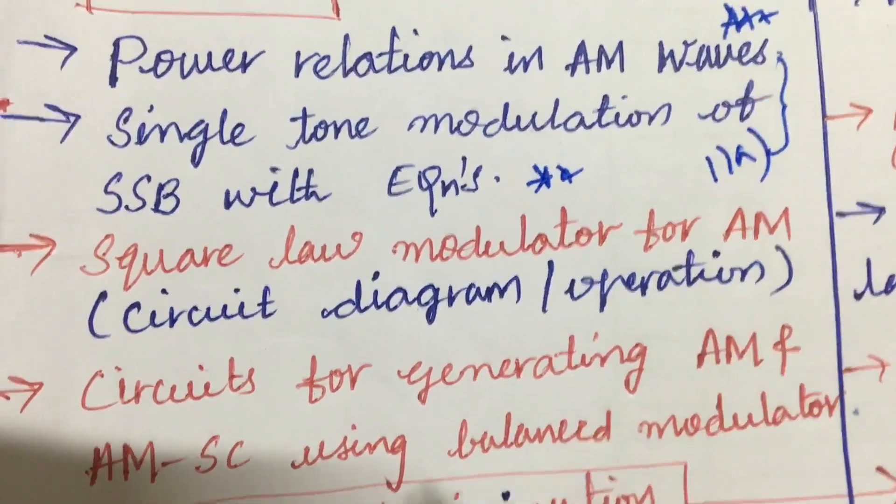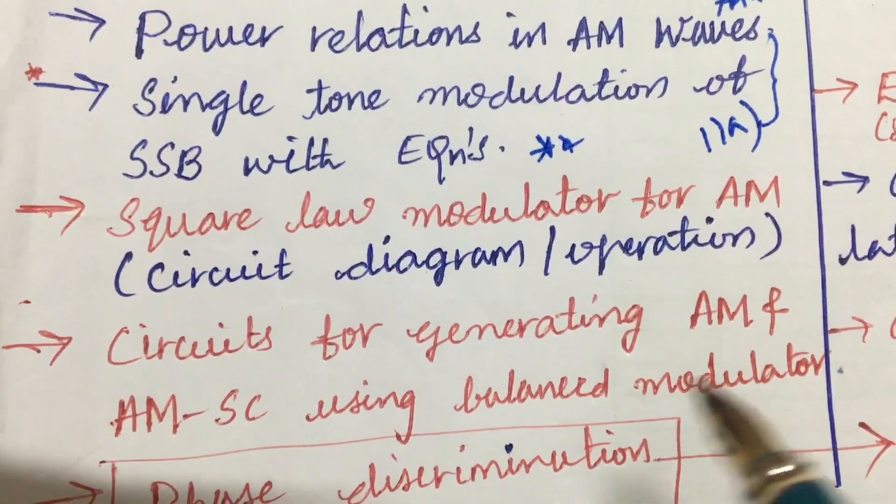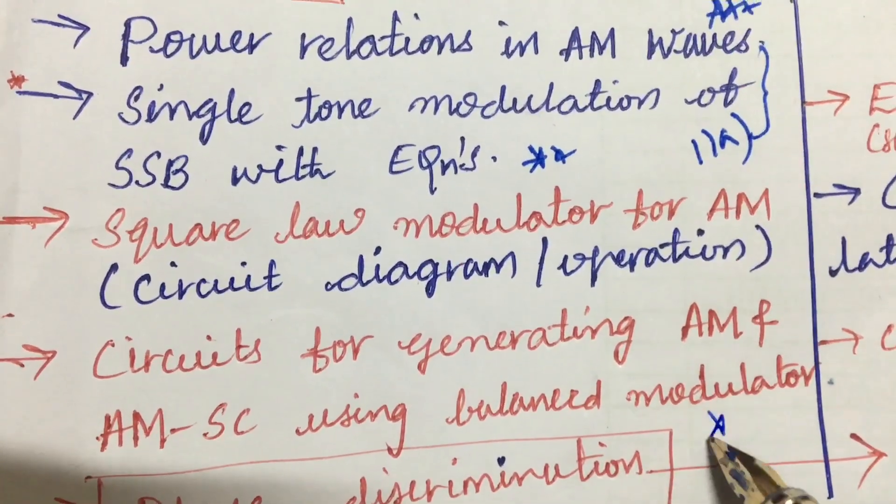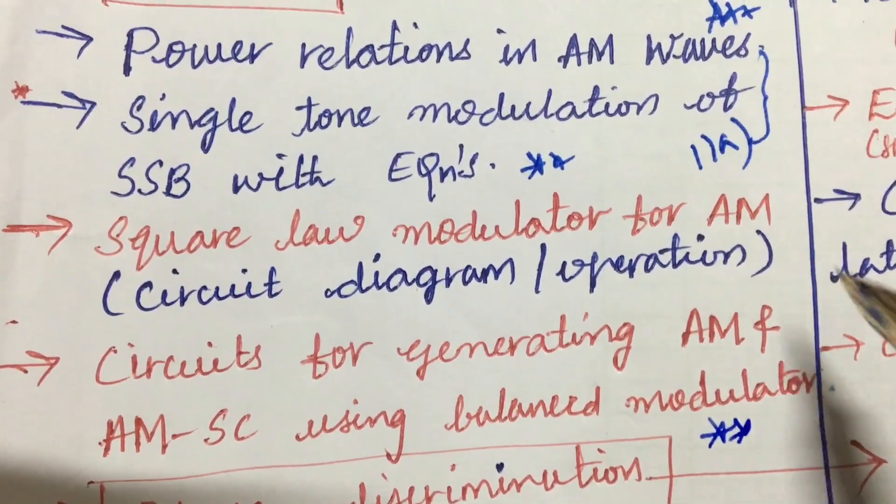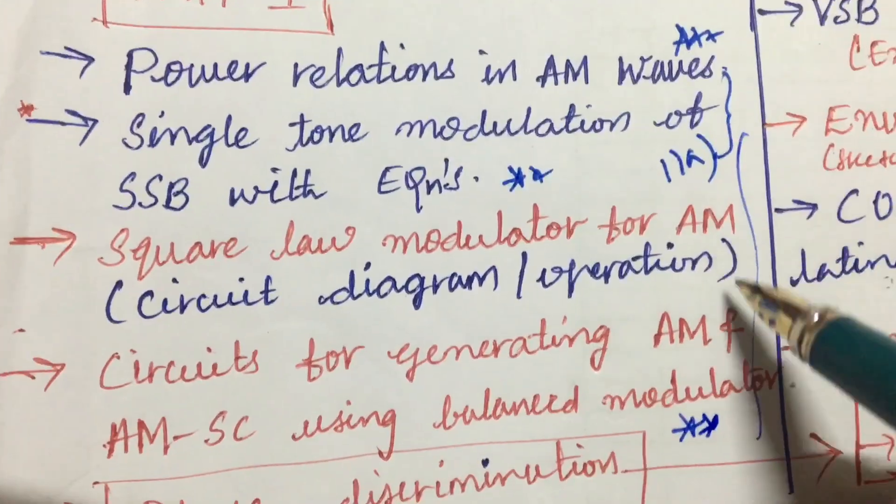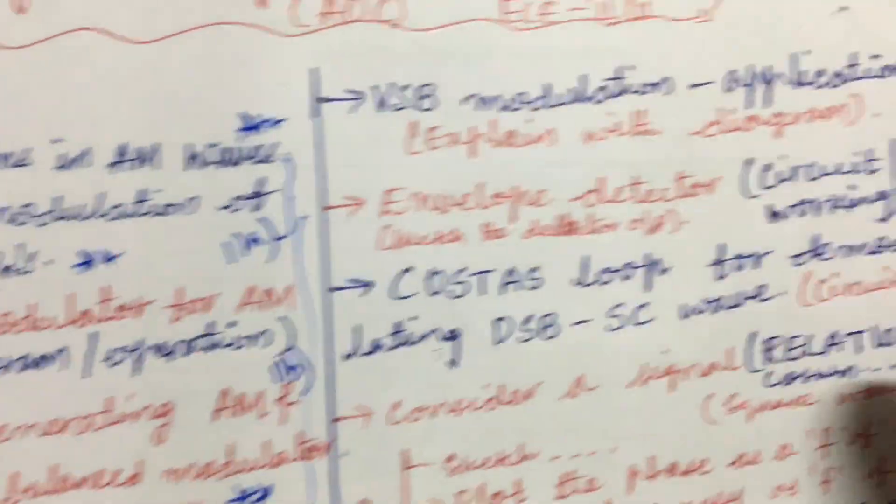The square law modulator for AM circuit diagram and the operation of it, as well as circuit for generating AM and AMSC using balance modulator. Related to balance modulator also they are going to ask, and from this part you can get 1B for sure, dear students please do work out accordingly.